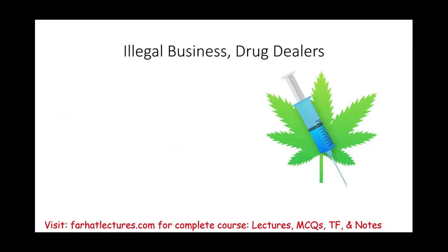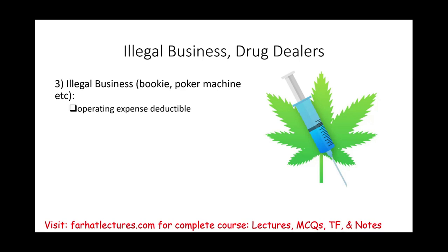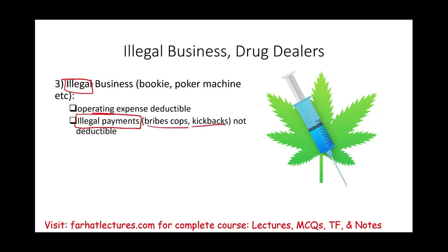What about illegal businesses? Examples include running a gambling operation, being a bookie, or operating illegal poker machines. For illegal businesses, you can still deduct operating expenses — supplies, employees, contractors, utilities — because your business income is also taxable. However, illegal payments within that business, such as bribing cops or judges, are not deductible. The operating income is taxable, and operating expenses are deductible, unless they constitute illegal payments.